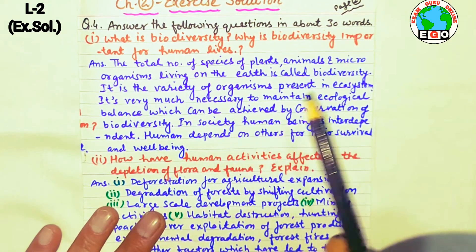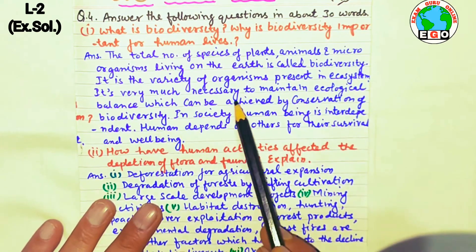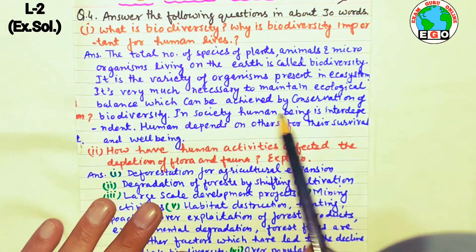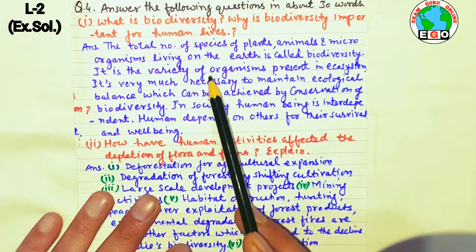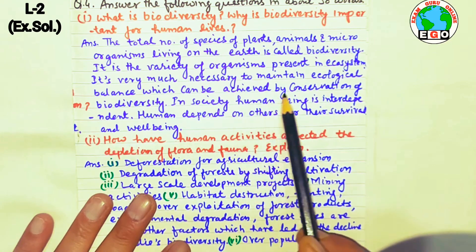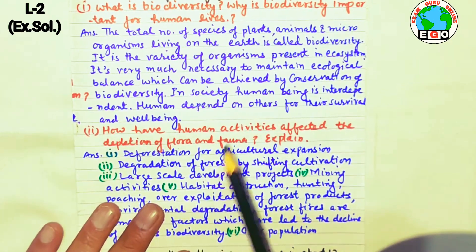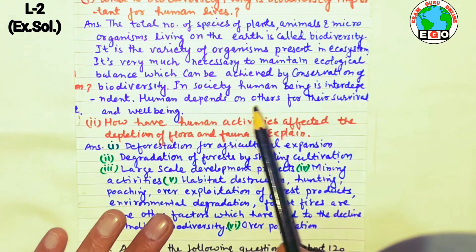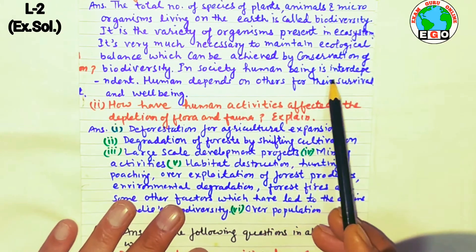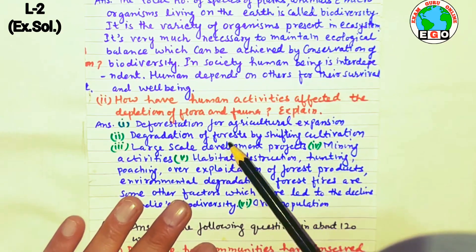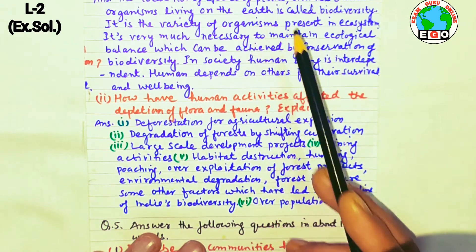This variety of organisms exists within an ecosystem. It is very necessary to maintain ecological balance, which we can achieve through the conservation of biodiversity. If even 2–4 species disappear, it causes great damage. Human beings are interdependent — they depend on plants, animals, and micro-organisms for their survival and well-being.